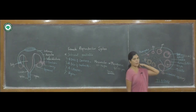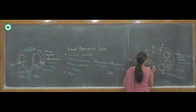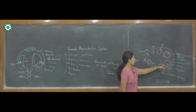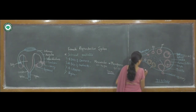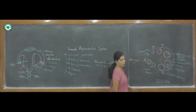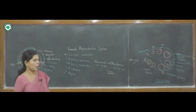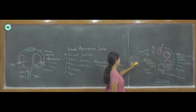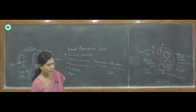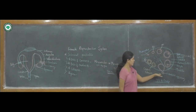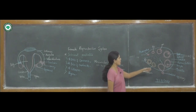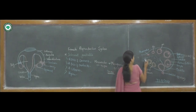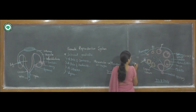After ovulation, or after the oocyte or egg comes out from the Graafian follicle, the remaining Graafian follicle turns into a yellow body known as the corpus luteum. The corpus luteum then turns into a white scar body — if the egg is not fertilized, the remaining follicle becomes corpus luteum, and the corpus luteum turns into a white scar known as corpus albicans.